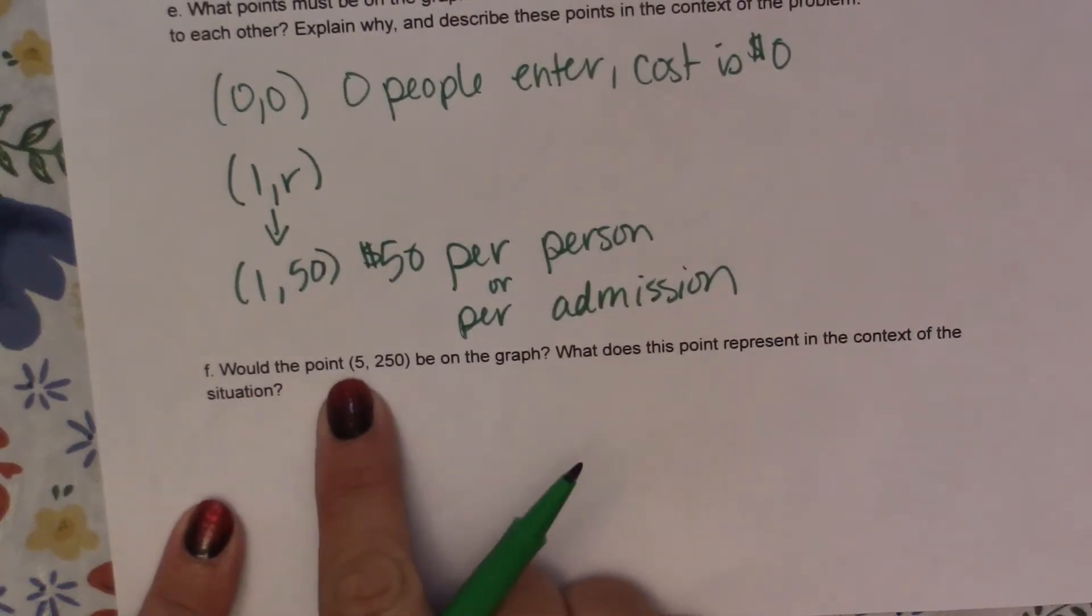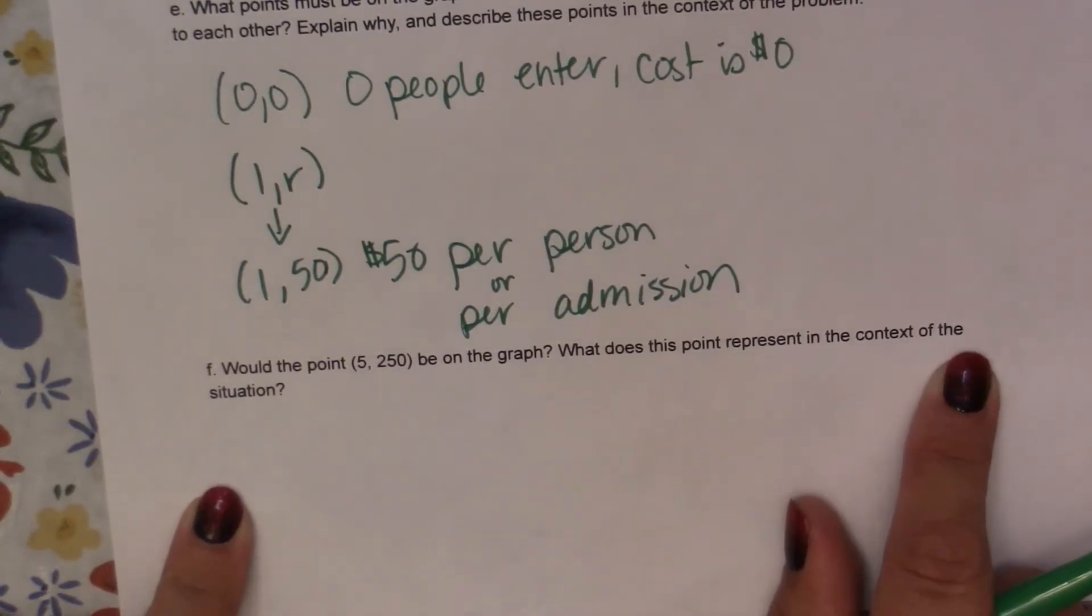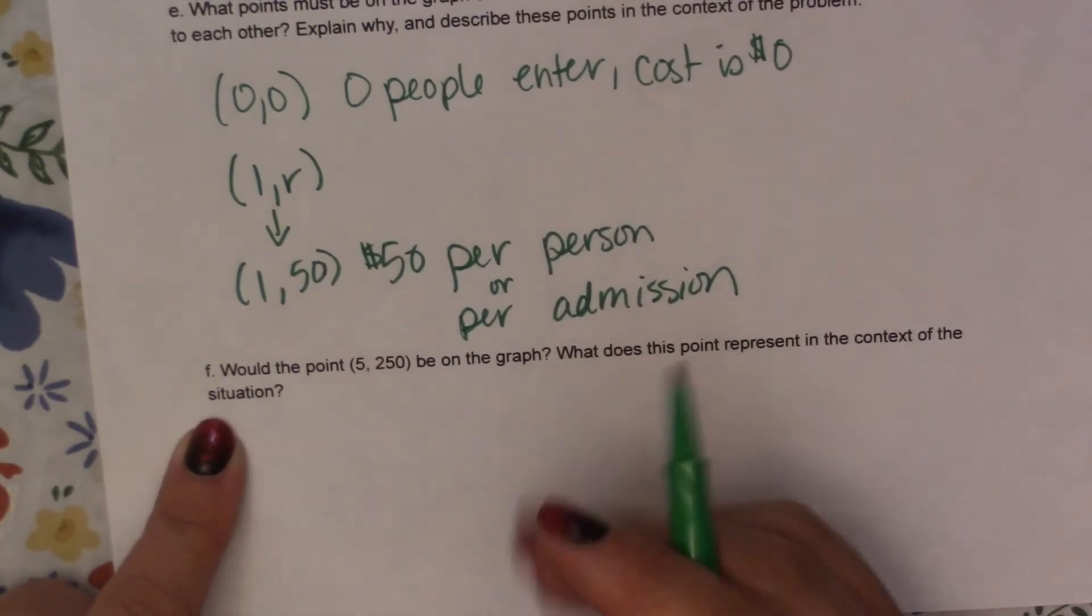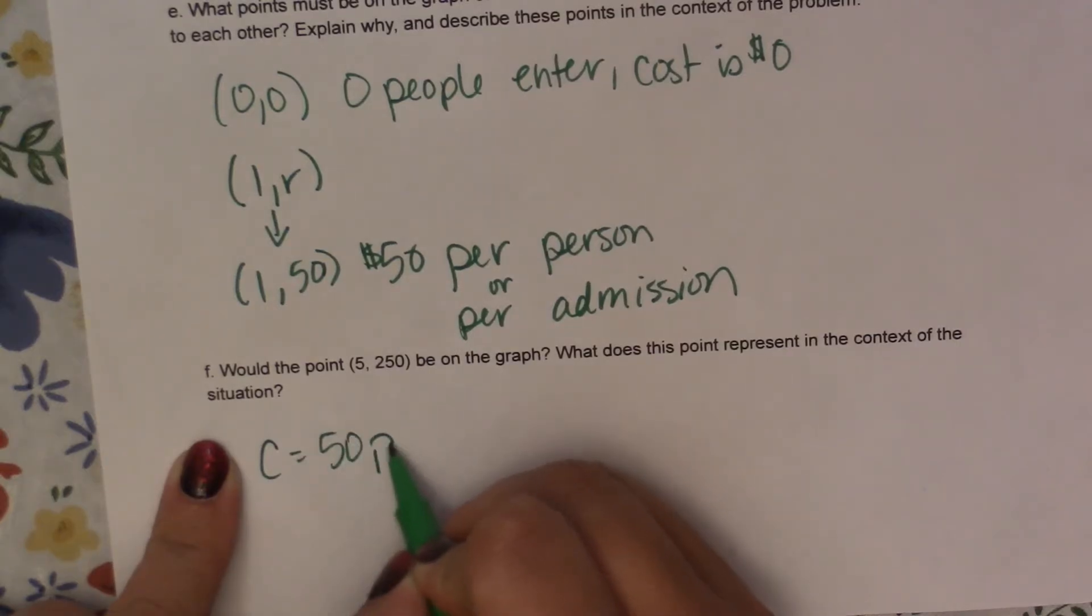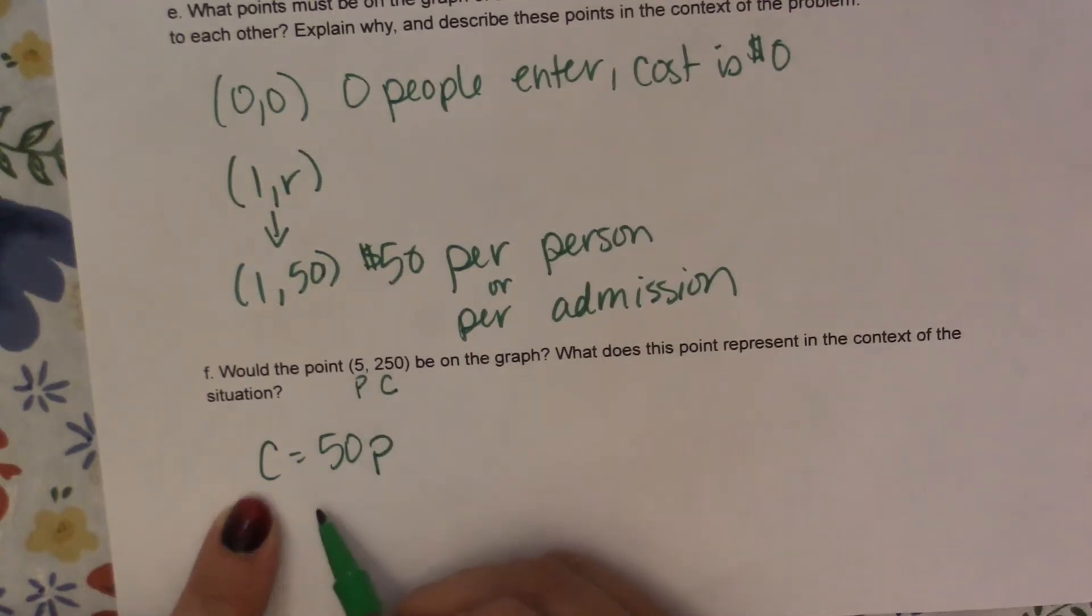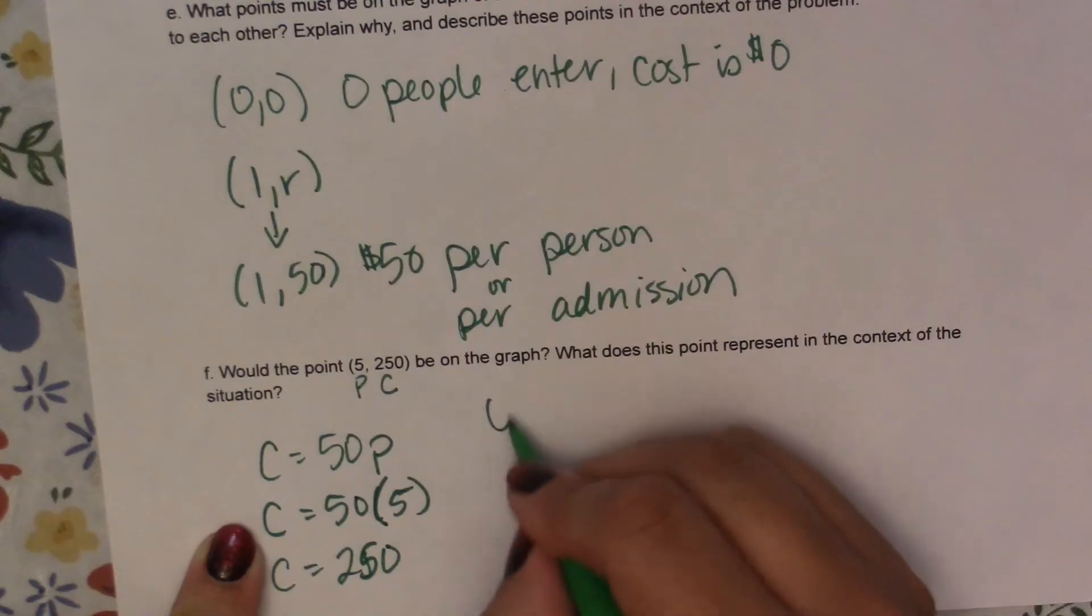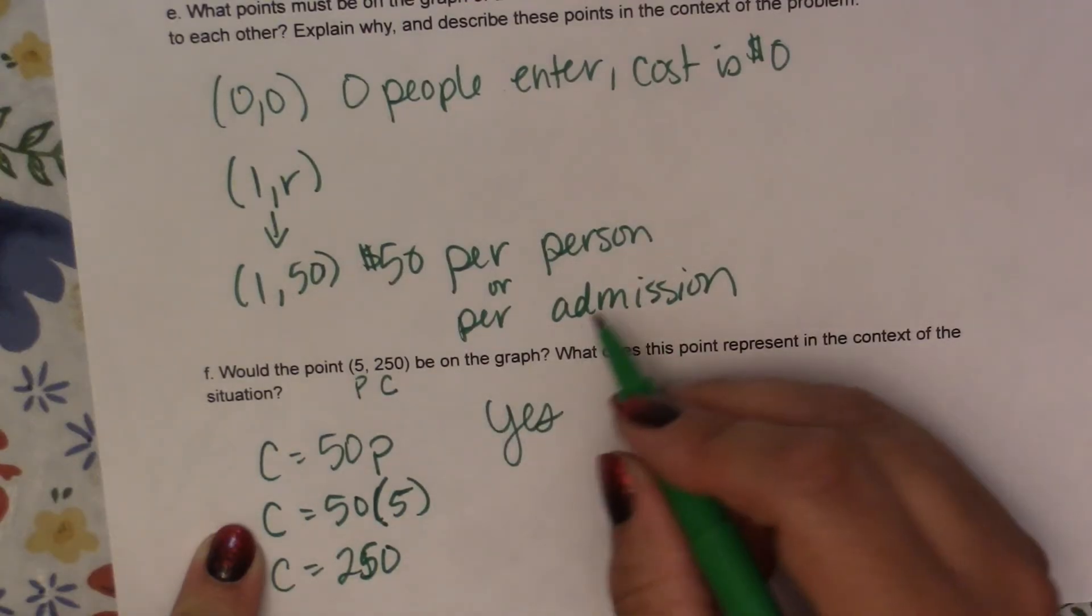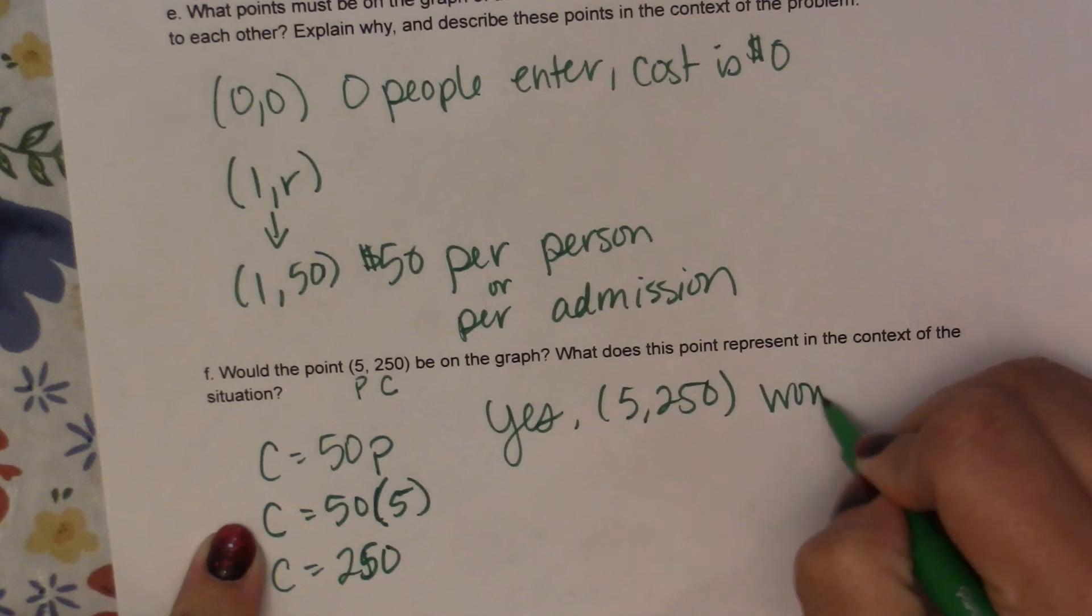And our last question. Would the point 5 comma 250 be on the graph? What does this point represent in the context of the situation? So if we use our equation, C equals 50P. So this is our number of people and this is our cost. If I put in a 5 here, so my cost is equal to 50 times 5. 50 times 5 is 250. So yes, 5, 250 would be on the graph.